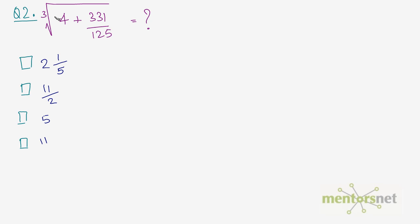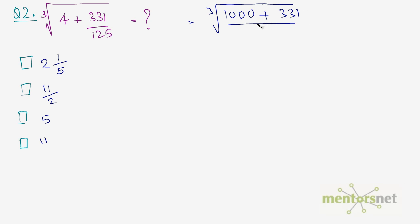Let us simplify what is inside this cube root. This can be written as 125 times 4, which is 1000, plus 331, all divided by 125. And 1000 plus 331 equals 1331, so we have the cube root of 1331 over 125.